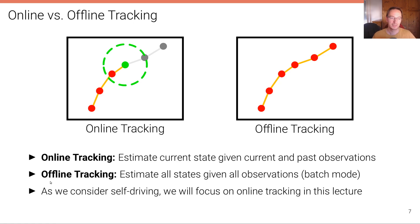In contrast, offline trackers estimate all states given all observations. So we need to know the entire sequence. We need to know all observations of all frames. This is also why some people call this tracking in batch mode. We need to know the entire batch. The sequence is the batch.